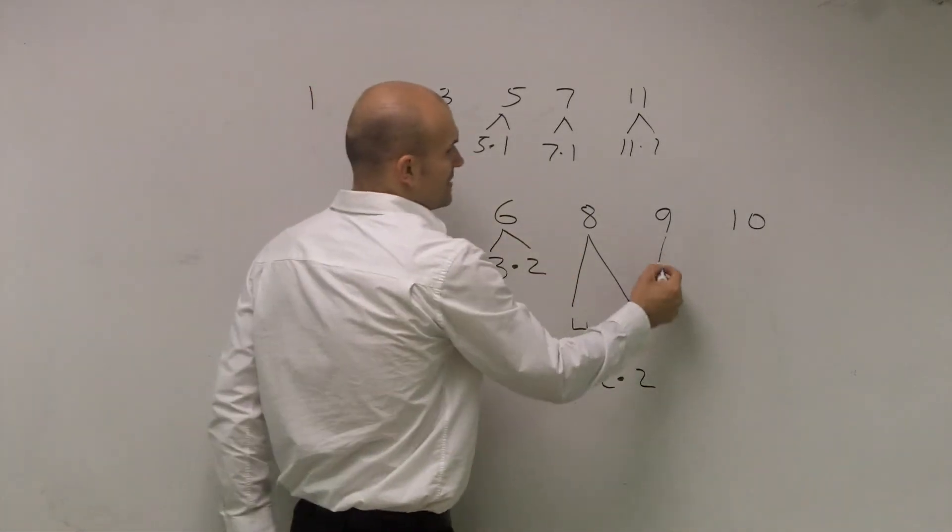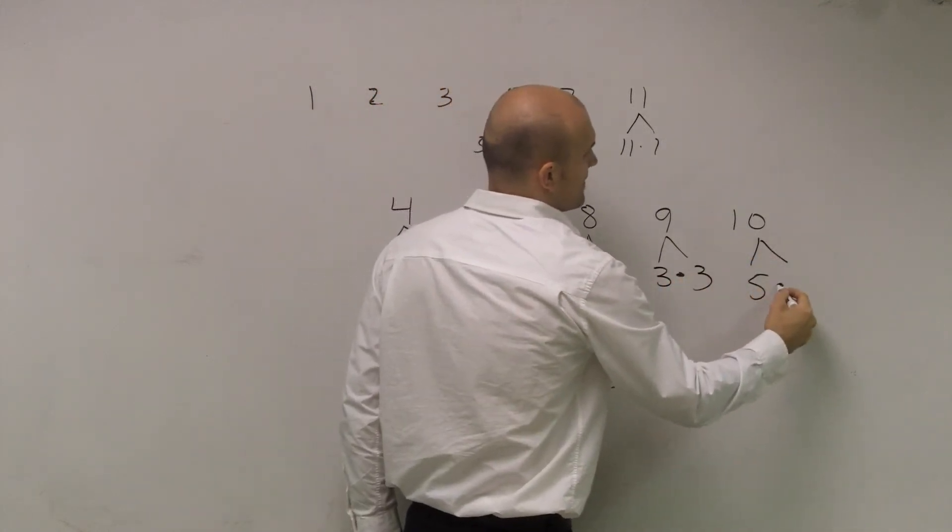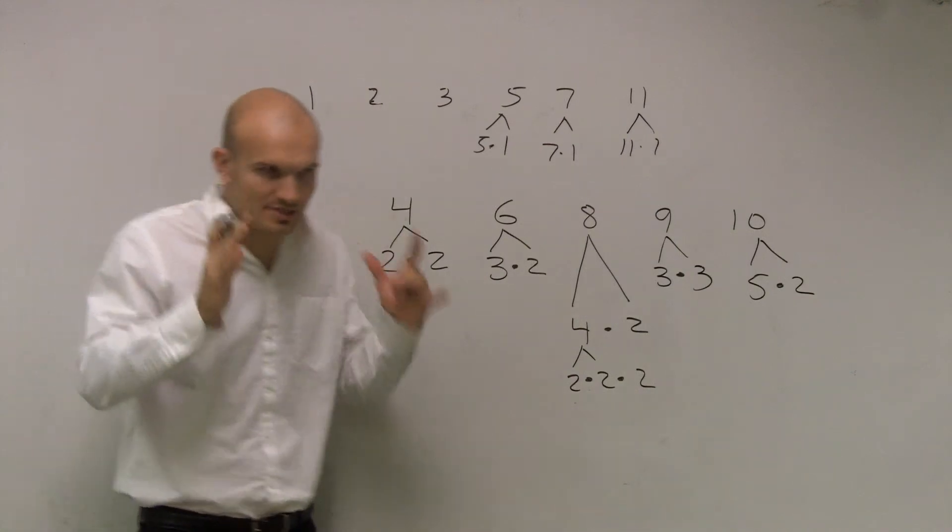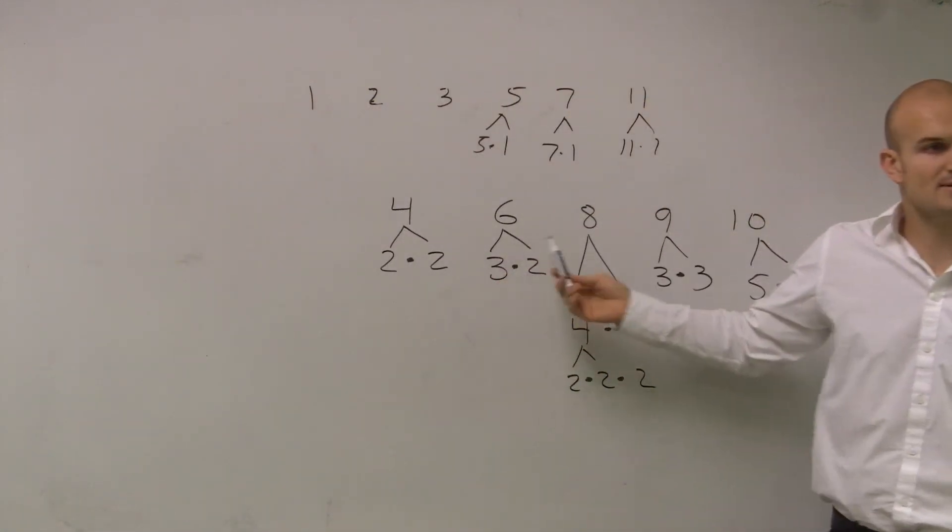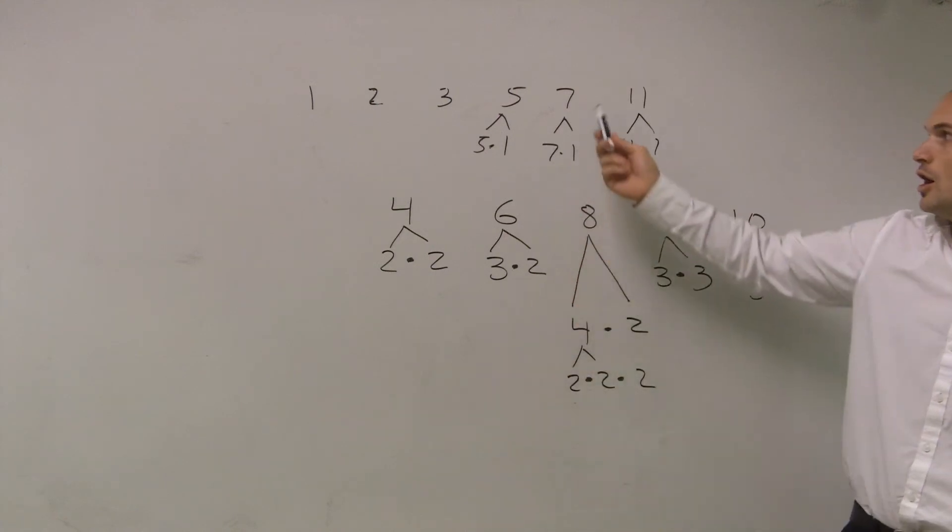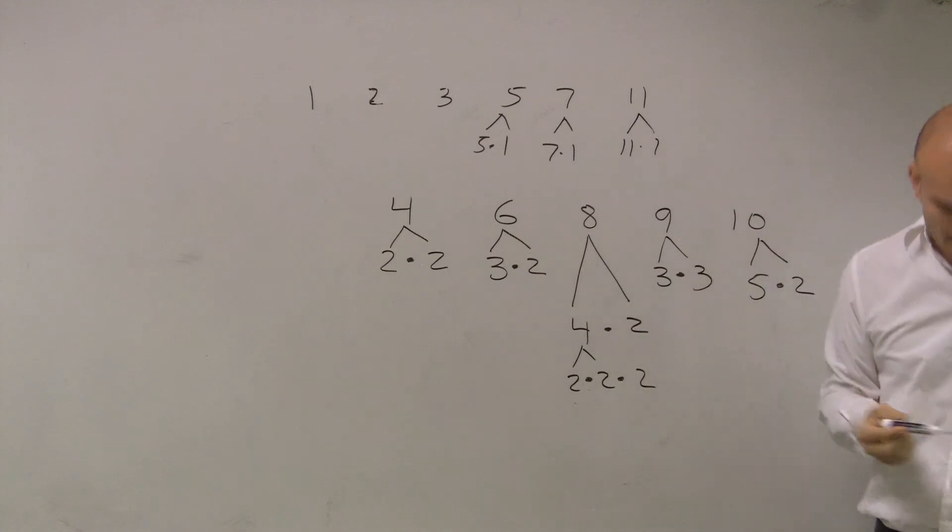And if we're going to do 9, that's just 3 times 3. And 10 would be 5 times 2. I just need you guys to understand, when you're writing that, the numbers that you're making your product out of are prime numbers. Got it? So now let's start with the game.